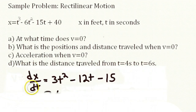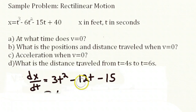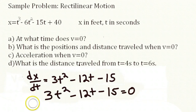We start by writing the velocity as a function of time. Remember, the velocity is the differential of the position with respect to time, so we write dx/dt equals 3t squared minus 12t minus 15.